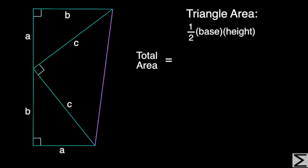Using the triangle area formula on the original triangle, we get half of A times B. On the larger triangle, we get half of C times C. And we can simplify this to get A times B plus one half of C squared.